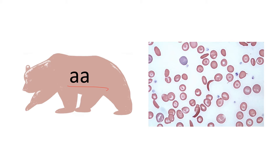Mama Bear represents being homozygous for the mutated sickle cell hemoglobin allele. This produces sickled red blood cells, which while highly resistant to malaria, often cause blood clots. This tendency to cause blood clots is what natural selection is going to act on.